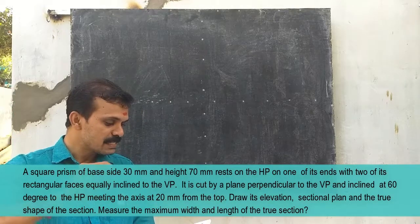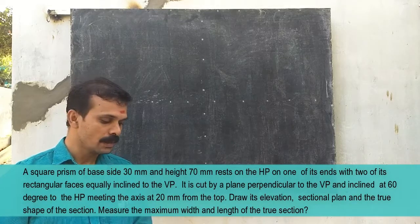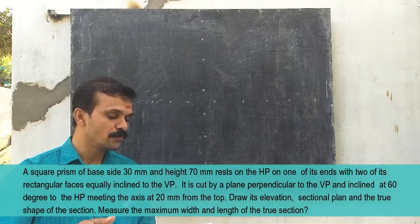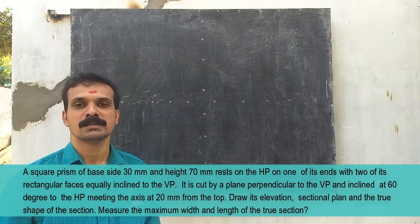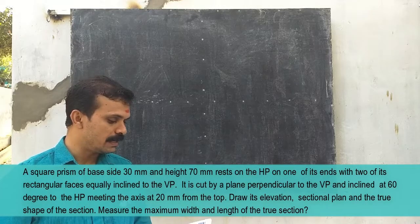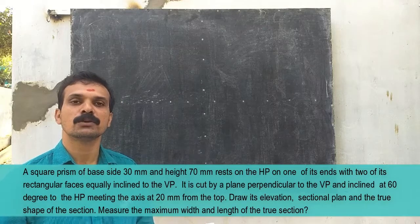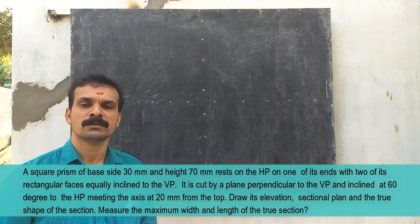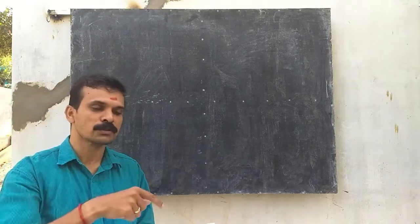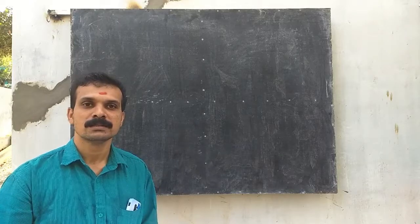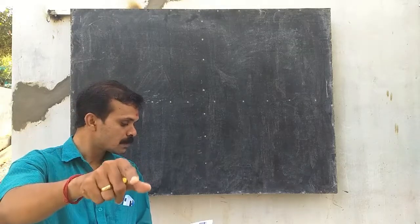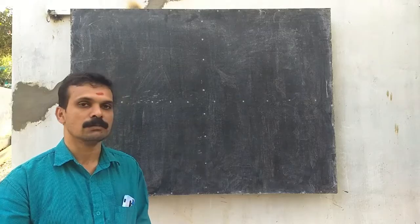A square prism of base side 30 mm and height 70 mm rests on HP on one of its ends, with two of its rectangular faces equally inclined to VP. How can we place a square prism with two faces equally inclined to VP? It is possible when the top view of the square prism is a diamond — so two rectangular faces equally inclined means the top view will be a diamond.